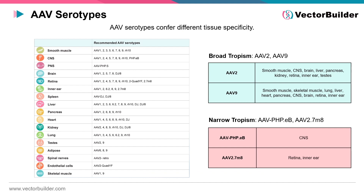An AAV serotype refers to a distinct variant of the adeno-associated virus characterized by differences in the amino acid sequence of its capsid proteins. These serotypes exhibit unique tropism and transduction efficiencies, influencing their suitability for specific gene therapy applications. Certain serotypes like AAV2 and AAV9 have broad tropism and can infect a wide variety of tissues and cell types, while others like AAVPHP.EB and AAV2.7M8 have narrower tropism. Interestingly, these serotypes were derived through methods that will be discussed further in this presentation.